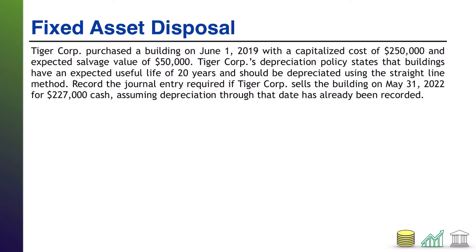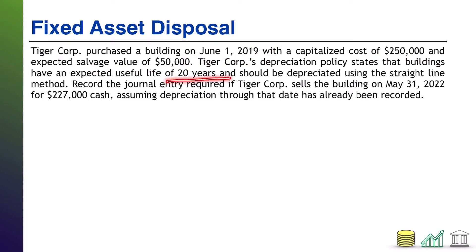We won't have to keep redoing a bunch of new math. Tiger Corps purchased a building on June 1, 2019. I give you the capitalized cost and the salvage value. Tiger Corps' depreciation policy puts a useful life of 20 years on its buildings and they use the straight-line method of depreciation.